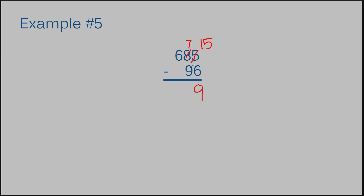I cannot take 9 away from 7, so I have to do the same process. Just like we made the 5 into a 15 by adding a 1, we're going to add a 1 to the 7, making it 17. In order to add that 1, we borrow from the 6, which now becomes a 5. Now I can subtract my second column: 17 minus 9 is 8. Then 5 — there's nothing to subtract, so if I have 5 and take nothing away, I'm still left with 5. The answer to example number 5 is 589.